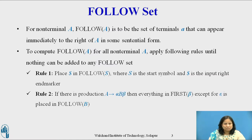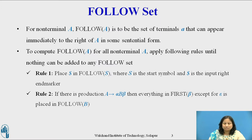Rule 2: If there is a production A derives alpha B beta, then everything in the first of beta except for epsilon is placed in the follow of B.